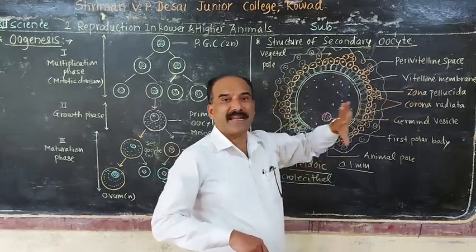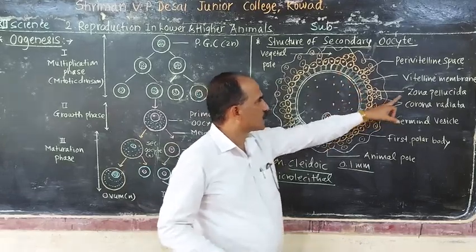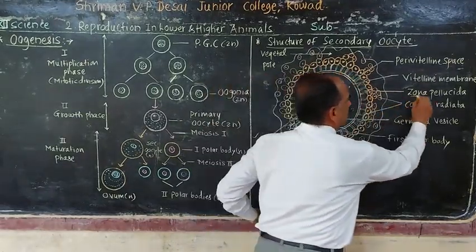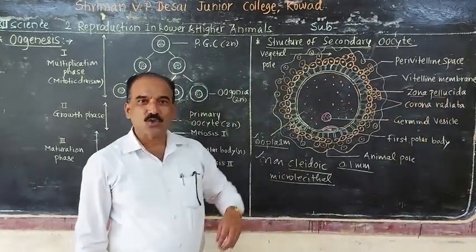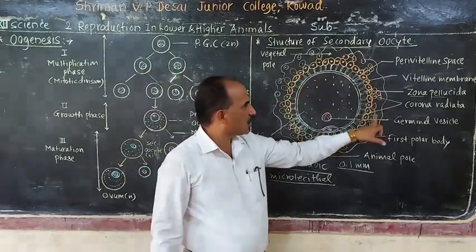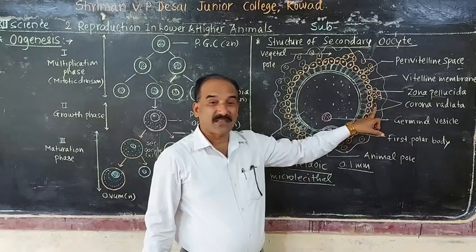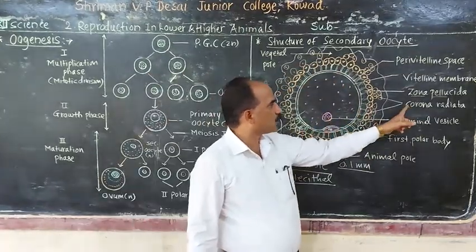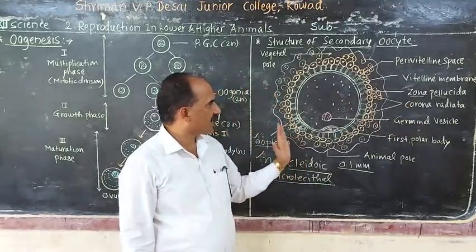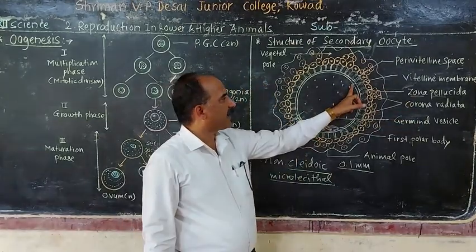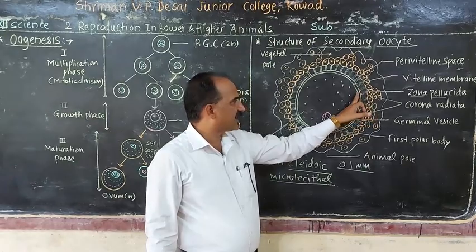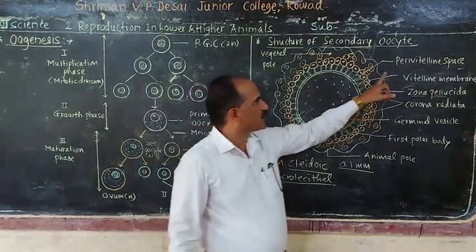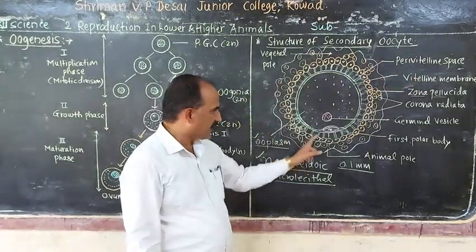Outside the vitelline membrane there is a non-cellular layer called the zona pellucida. Outside the zona pellucida, there is another protective layer called the corona radiata, which contains follicular cells. The space between the vitelline membrane and the zona pellucida is called the perivitelline space, which contains the polar body.